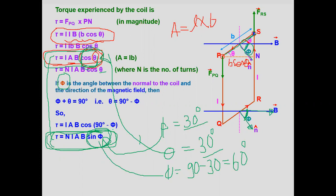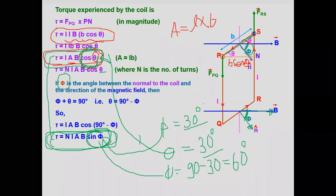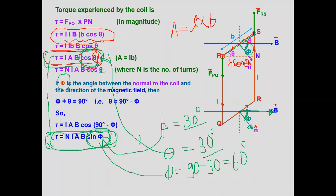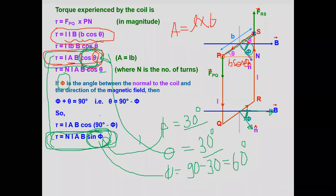In yesterday's homework, the first two questions are based exactly on this concept. Question number 33 and question number 34 from yesterday's homework are completely the same — only the angle type differs. In one, φ is given, and in the other, θ is given. Both questions are the same; just a different angle is provided — you have a different angle of torque.